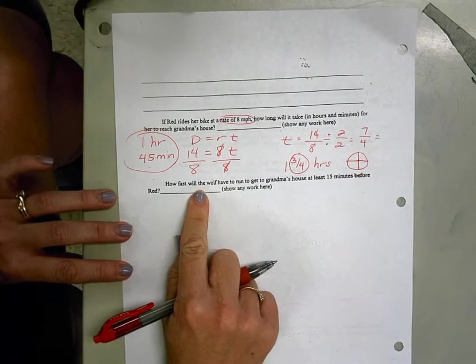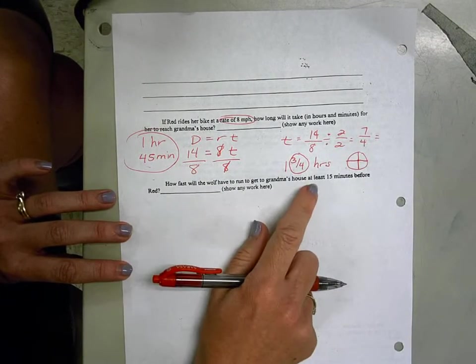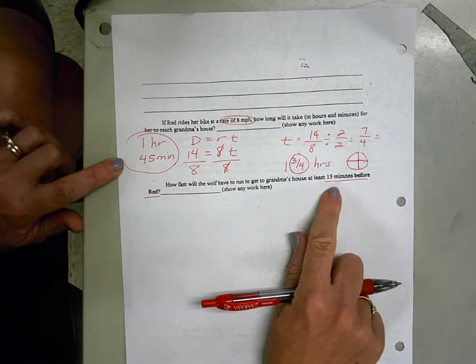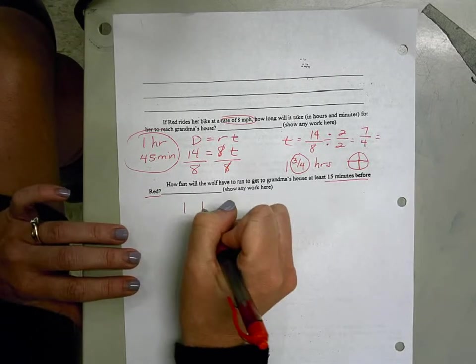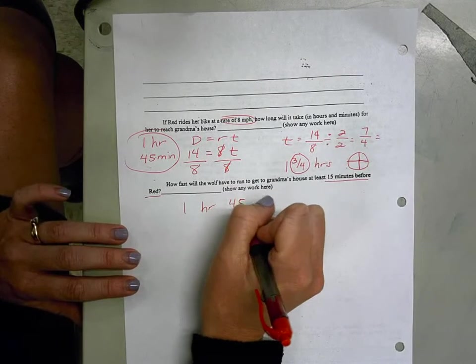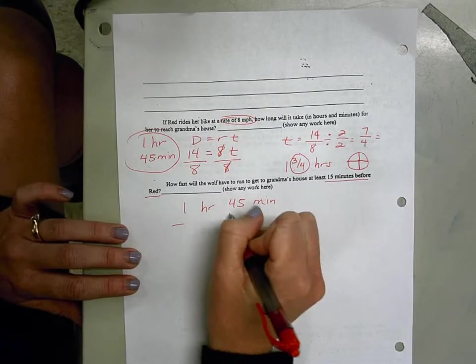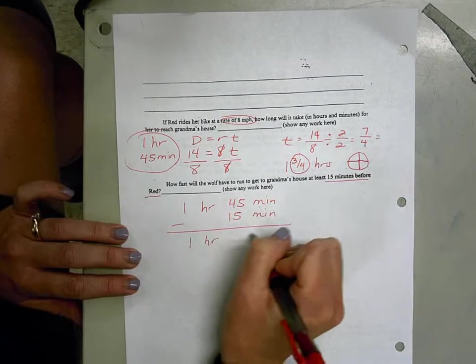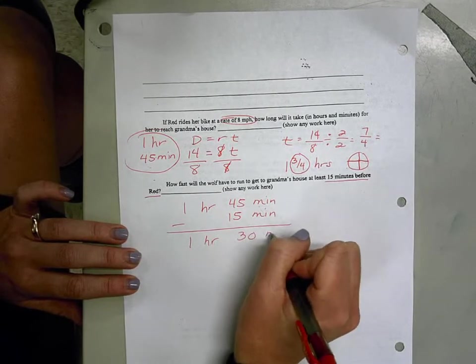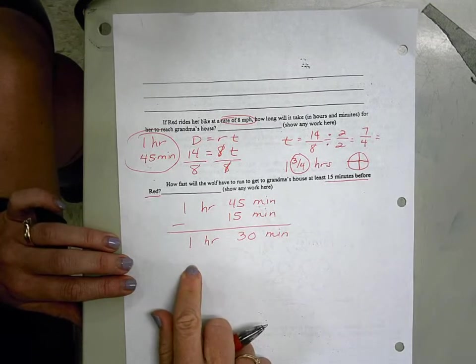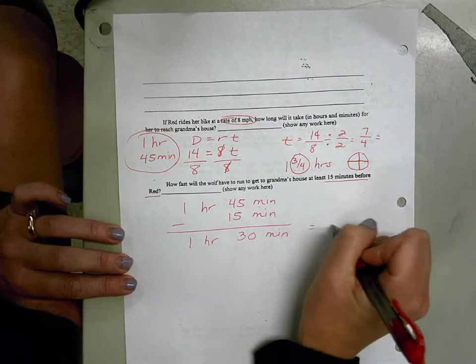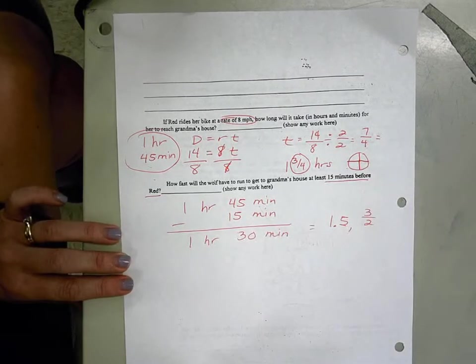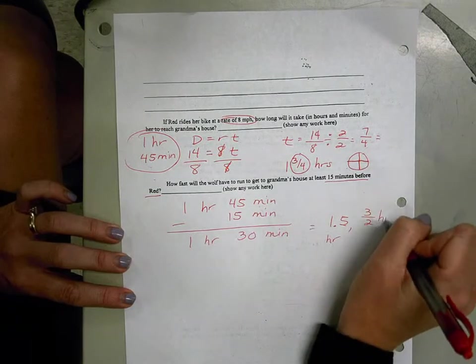How fast will the wolf have to run to get to Grandma's house at least 15 minutes before Red? So you're going to have to use Red's time and start by subtracting 15 minutes. 1 hour and 45 minutes, minus the 15 minutes so he can get there early, means that the wolf is going to take an hour and 30 minutes. And let's make that number a lot easier. That's the same thing as an hour and a half. And I'm just going to write that as either the decimal or as the improper fraction. So 1 and a half hours or 3 halves hours.